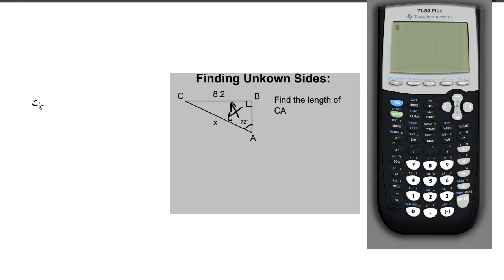So we're going to say the sine of 72 degrees is equal to the opposite side 8.2 over the hypotenuse X.